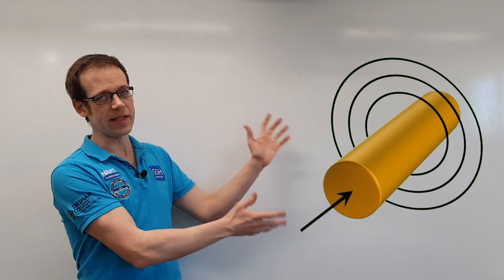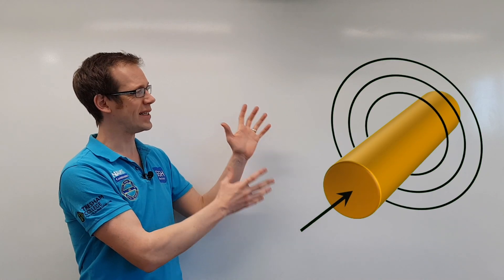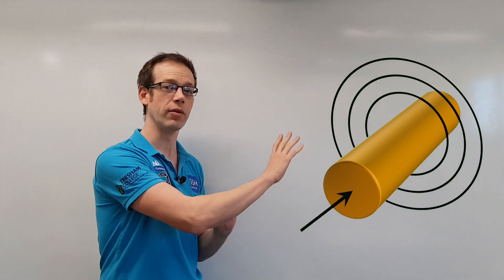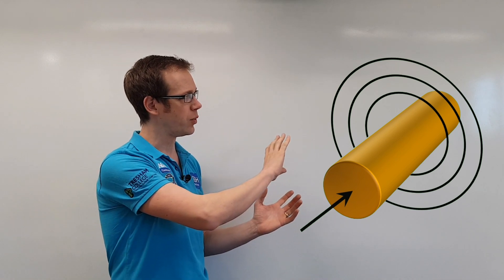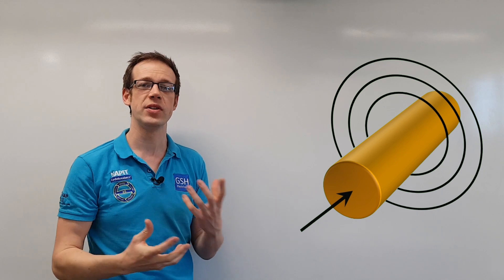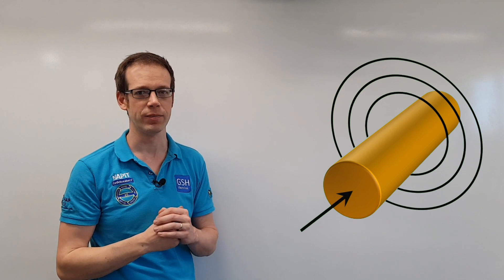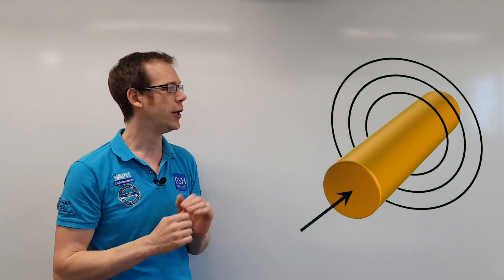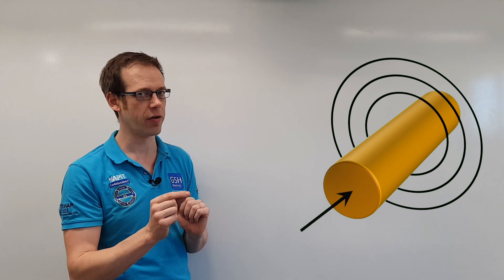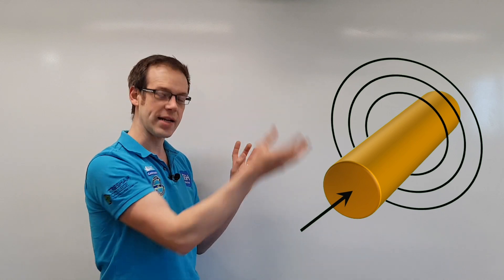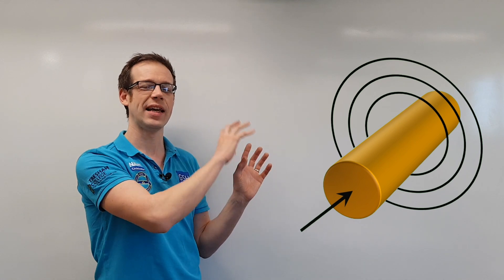First of all we're going to consider this image here. We can see a conductor and the arrow pointing into it shows that there is current going through the conductor. You'll notice that we've got lines wrapped around that conductor, and that represents the shape of the magnetic field. When current passes through a conductor — and in this video we're particularly talking about DC current — the magnetic field appears around the conductor and it has a circular shape.